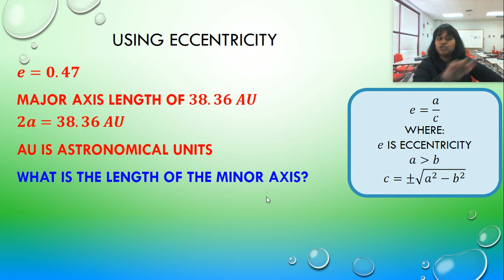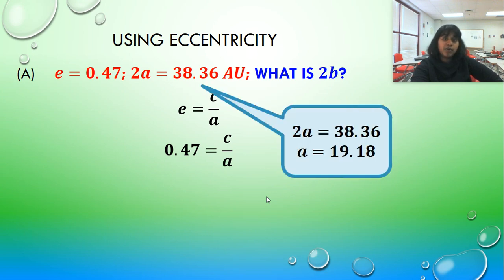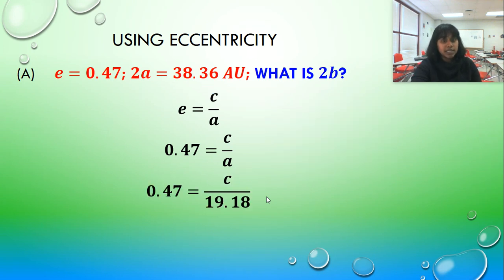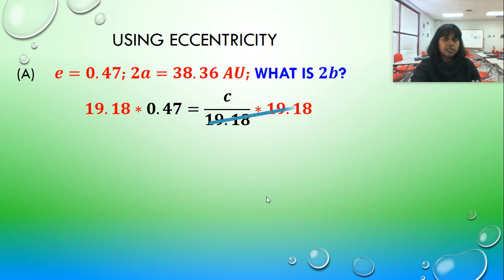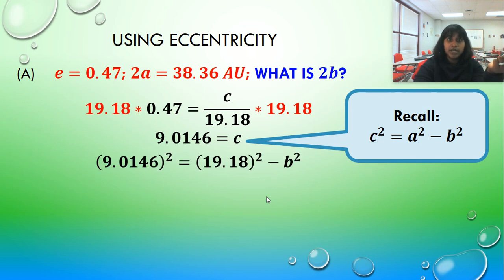So written out with just the information we pulled from that and converted it into math notation, let's plug in what we know. So if E is C over A, then that's 0.47 is C over A. And if 38.36 is 2 times A, then divide by 2 and you get your A value. So now I can calculate my C value. Ta-da, ta-da, ta-da. And if I know A and I know C, then I can calculate my B value.